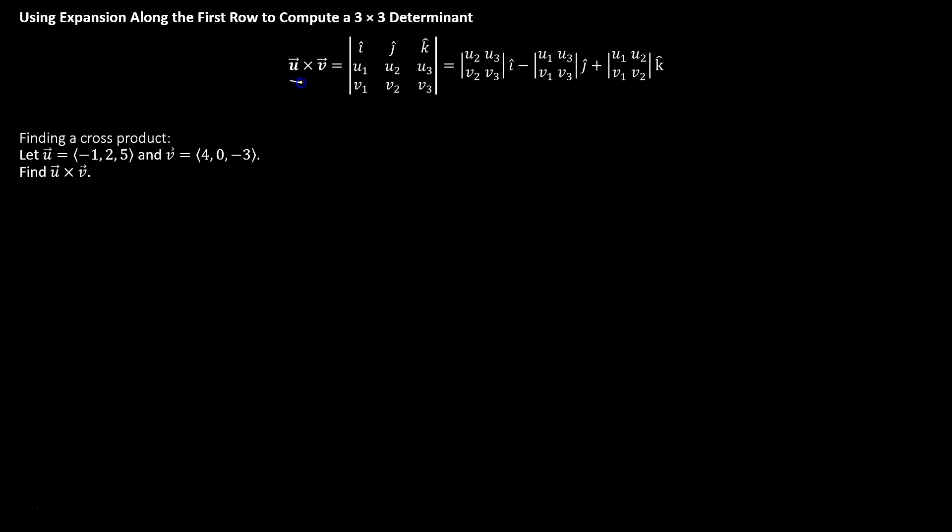If we're looking at the cross product u cross v, and we assume u has components u1, u2, u3, and v has components v1, v2, v3, then we're going to copy those components into the determinant.